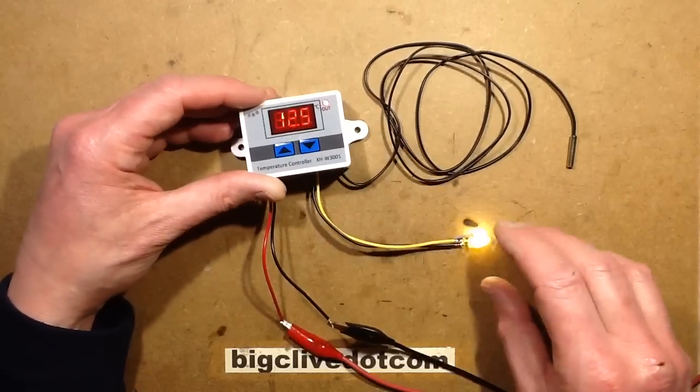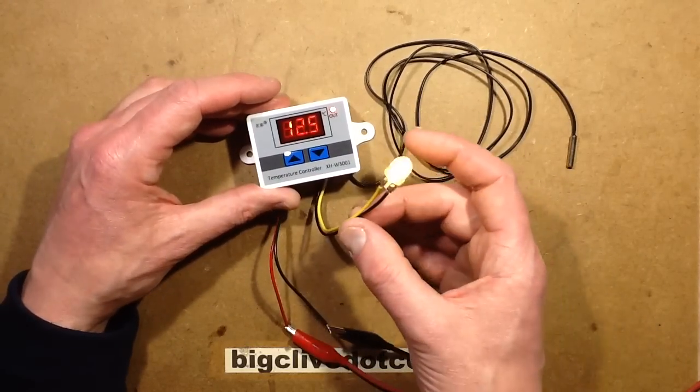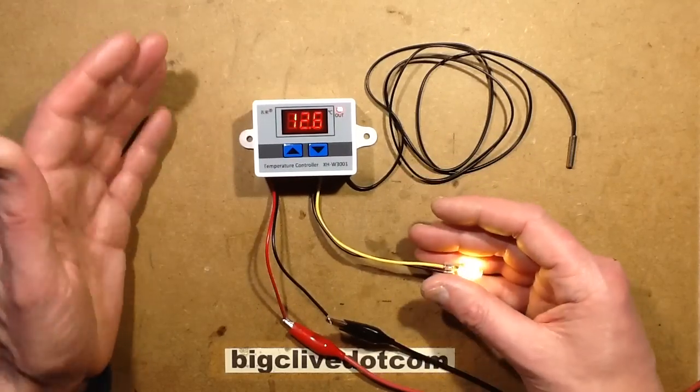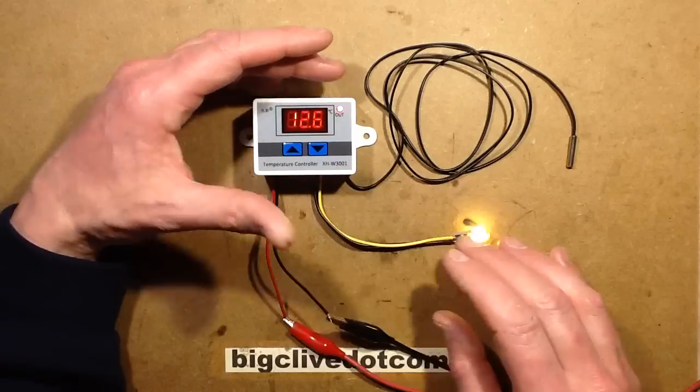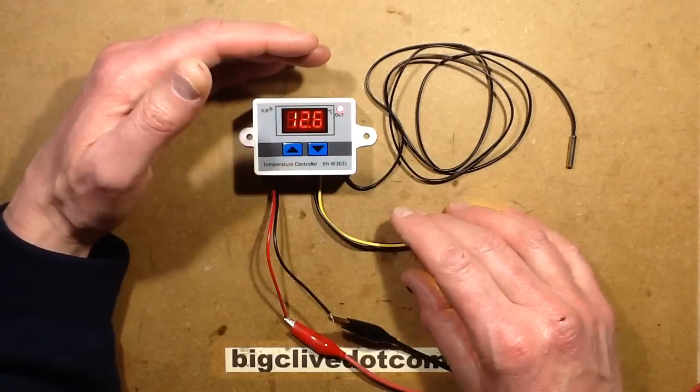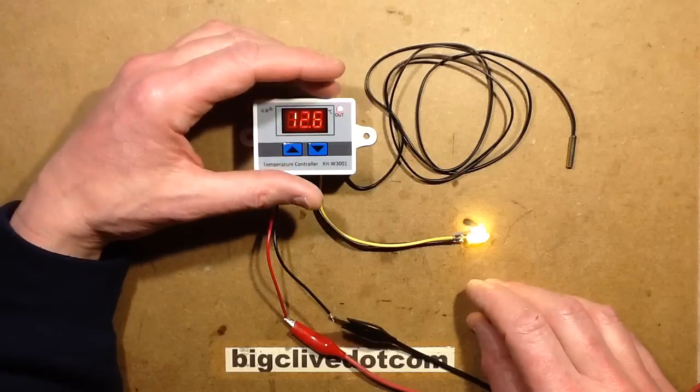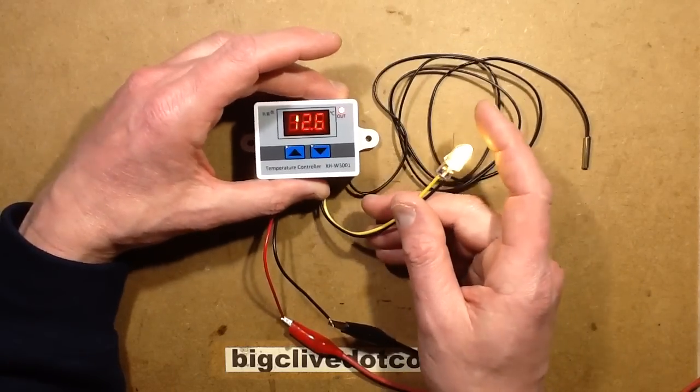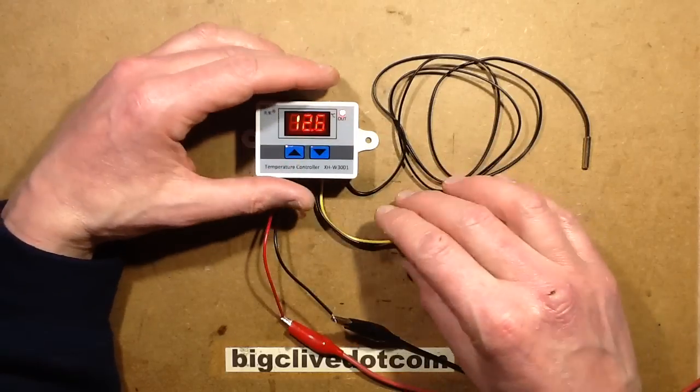It takes 12 volts in. The output, it's not a set of volt-free contacts, it is actually 12 volt comes straight back out. And if you've got a higher load, I mean this supposedly says you can switch 10 amps with it, but I never trust those little relays. I'm guessing it's going to be a Songo relay inside.